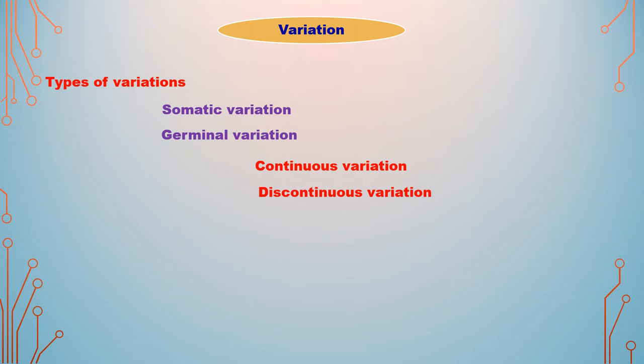This mutation theory is proposed by De Vries. The relationship between mutation and variation: mutation and variation are two events involved in the process of evolution. Mutation arises due to errors occurring in the DNA during replication, or exposure to UV rays or chemicals. Mutation leads to variation and brings about changes in the individual.